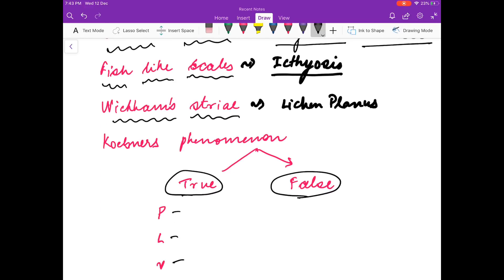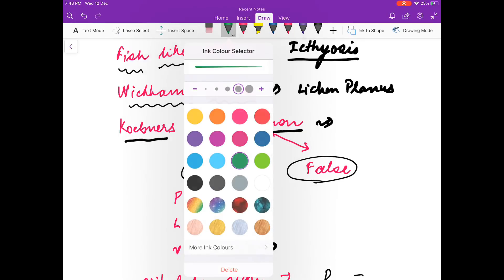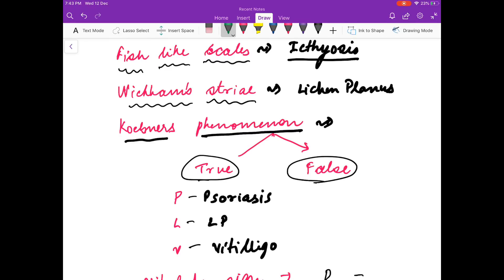Wickham's striae: lichen planus. Koebner's phenomenon: what is Koebner's phenomenon? When we give trauma on the normal skin, the lesions appear. So these are seen in psoriasis, lichen planus, and vitiligo. False Koebner's phenomenon is seen in warts and molluscum contagiosum.